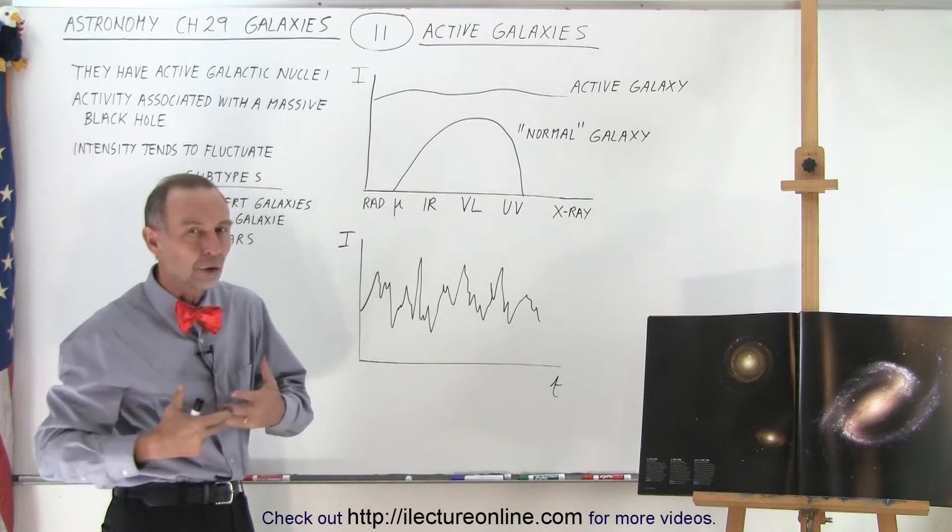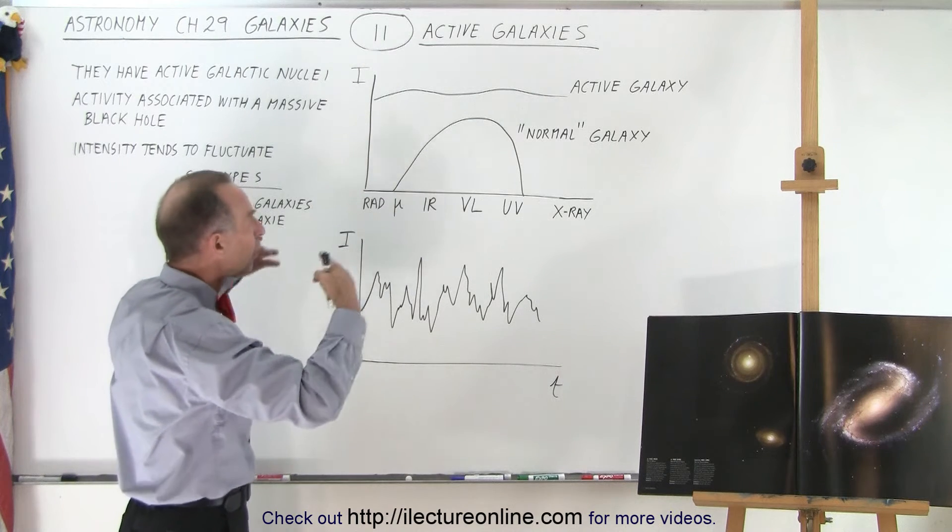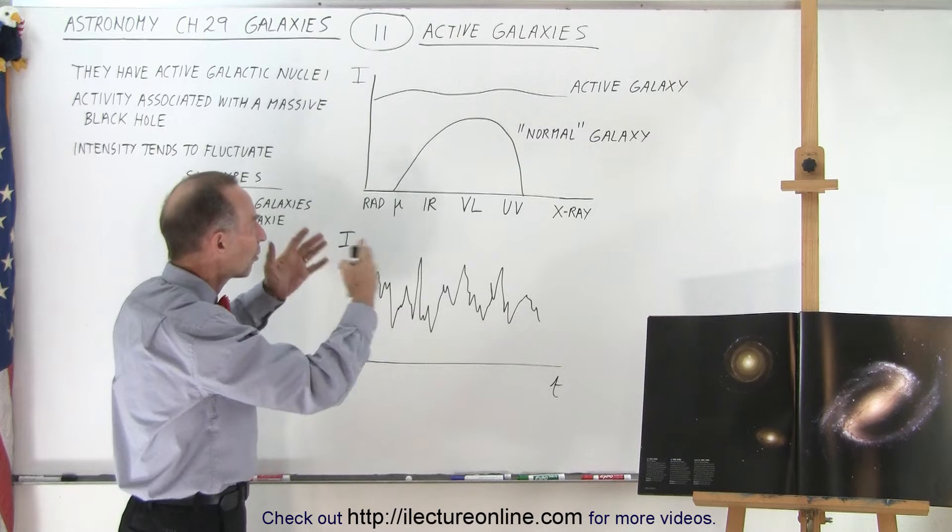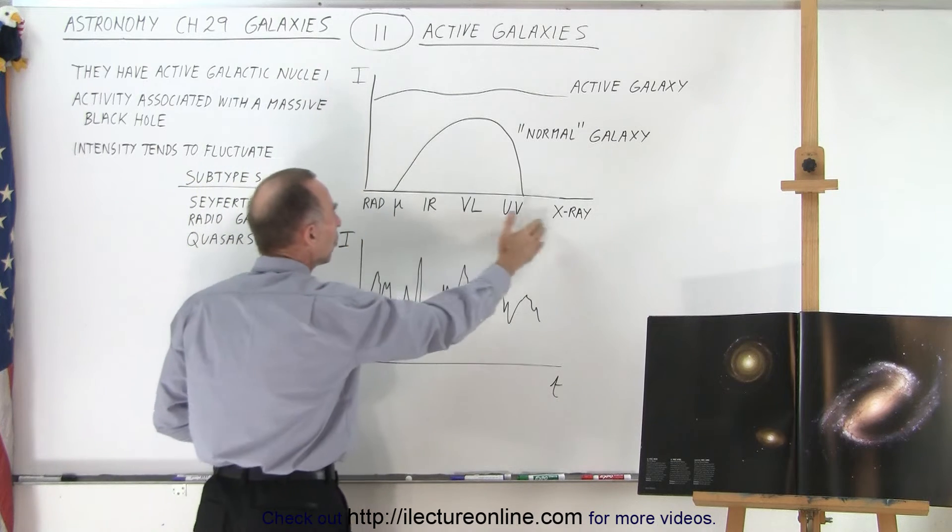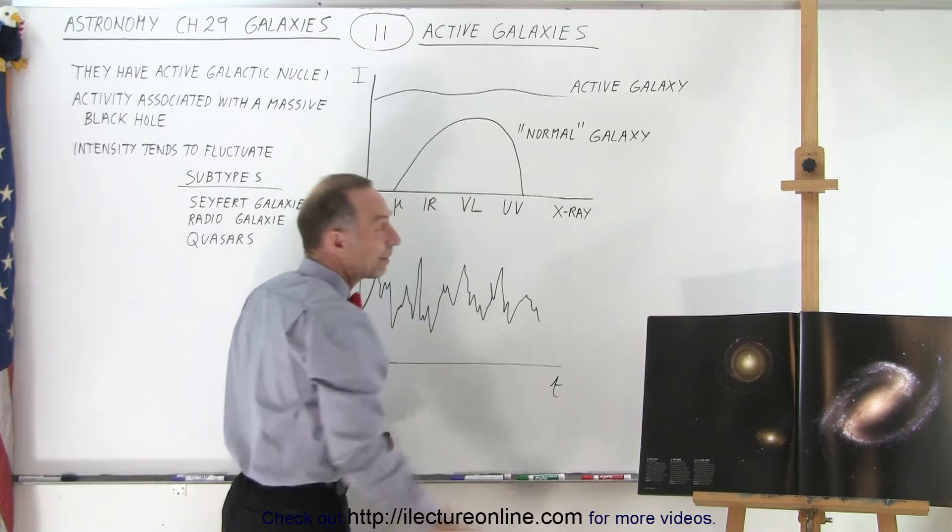You can see that active galaxies are unusual not because of their shape but because of the activity, putting out a lot more intense radiation, especially at the far range wavelengths of radio wave, microwave, and X-ray, which is not typical for a normal galaxy.